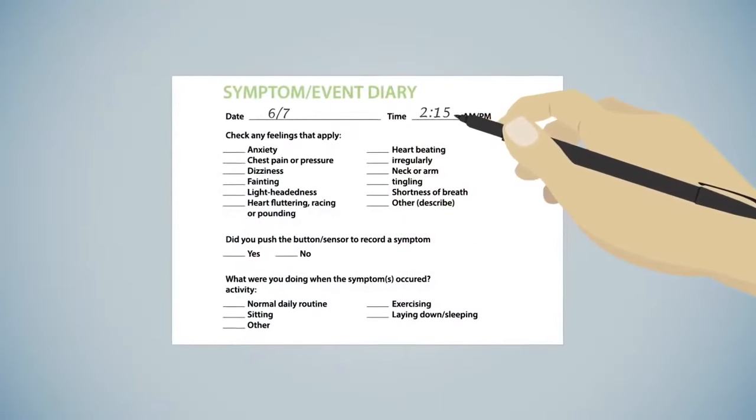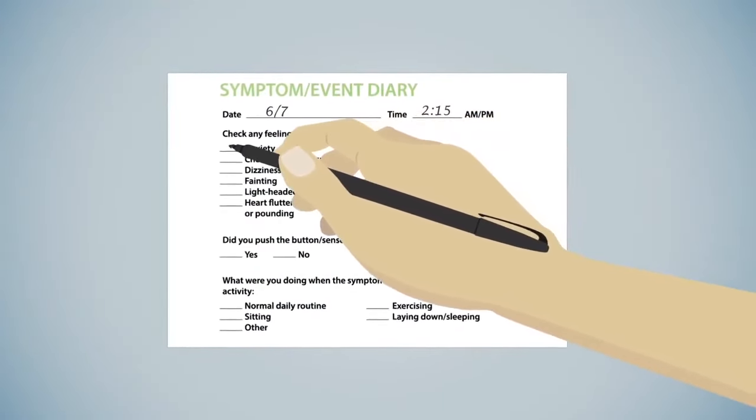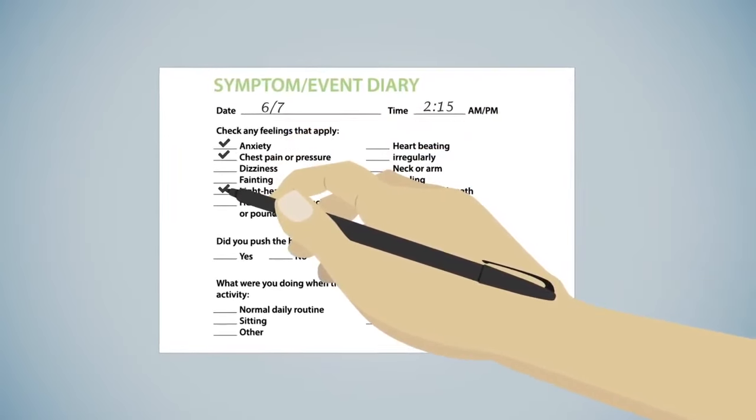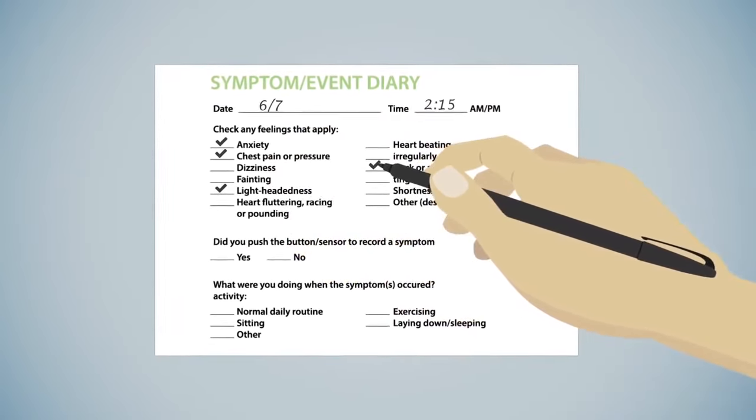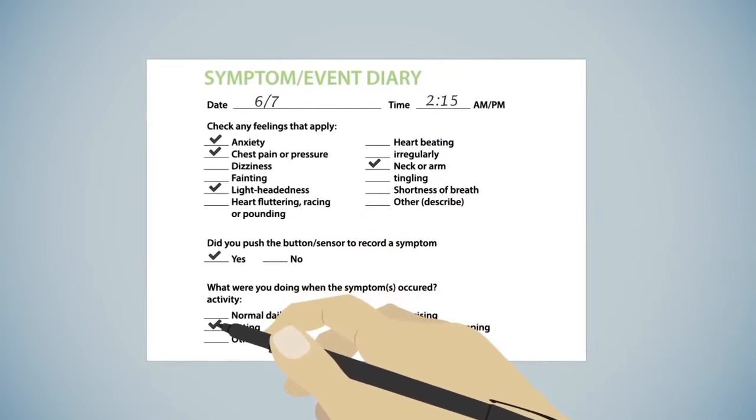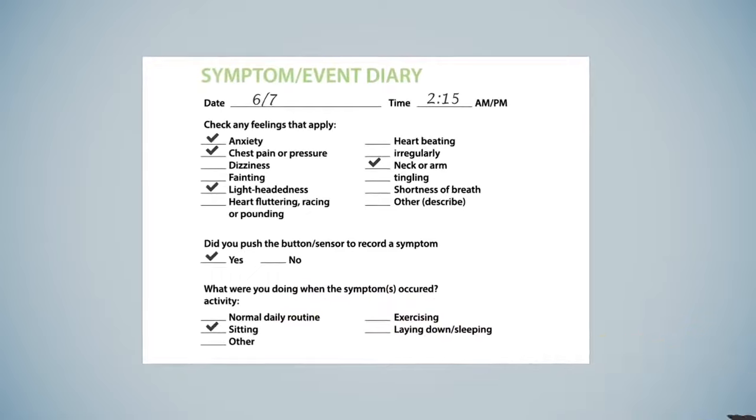Go to the diary and enter the date and time. Then, put check marks next to that same symptom and what activity you were doing at the time of that symptom. This information will be included in the clinical report, available to your physician at the end of service.